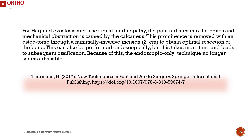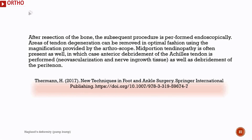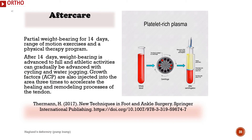Because of this, the endoscopic-only technique no longer seems advisable. After resection of the bone, the subsequent procedure is performed endoscopically. Areas of tendon degeneration can be removed in optimal fashion using the magnification provided by the arthroscope. Mid-portion tendinopathy is often present as well, in which case anterior debridement of the Achilles tendon is performed, including neovascularization and nerve ingrowth tissue, as well as debridement of the peritenon. Aftercare: partial weight bearing for 14 days, range of motion exercises, and a physical therapy program. After 14 days, weight bearing is advanced to full, and athletic activities can gradually be advanced with cycling and water jogging. Growth factors (ACP) are also injected into the area 3 times to accelerate the healing and remodeling processes of the tendon.